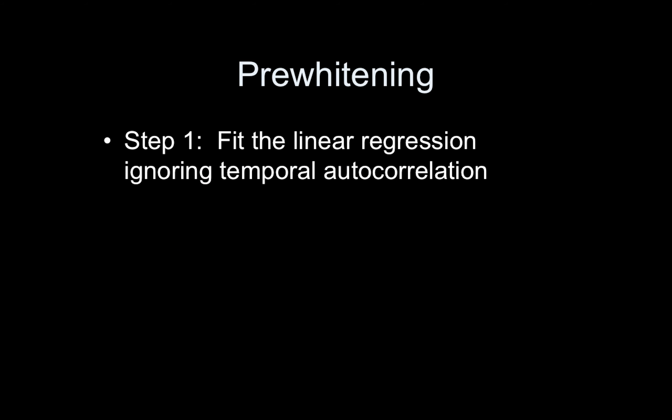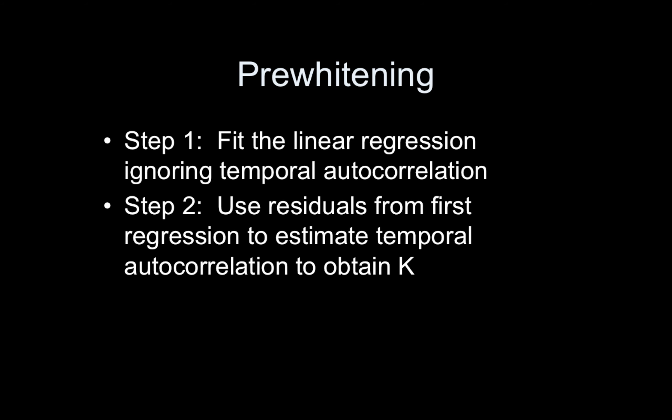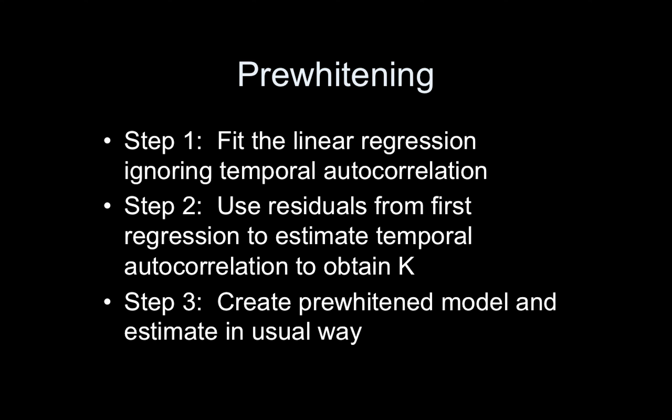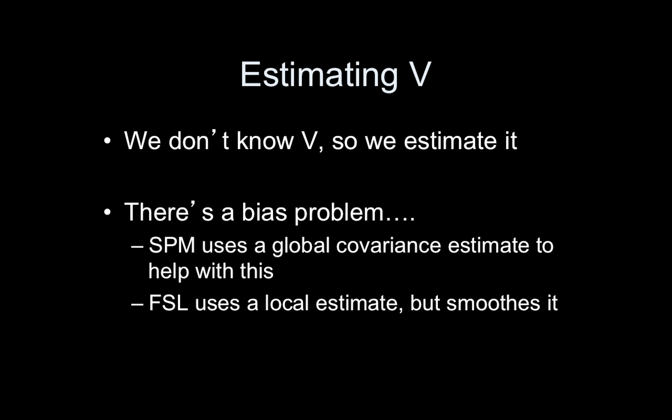Here's how pre-whitening is done generally. First, fit the linear regression ignoring temporal autocorrelation — just a standard OLS model. Then grab the residuals from that regression and use them to estimate the temporal autocorrelation, giving you V. Use V to get K. Then create the pre-whitened model and estimate it in the usual way. Step two — estimating V — is the really hard part, because there's a bias problem: the estimate ends up not being great.